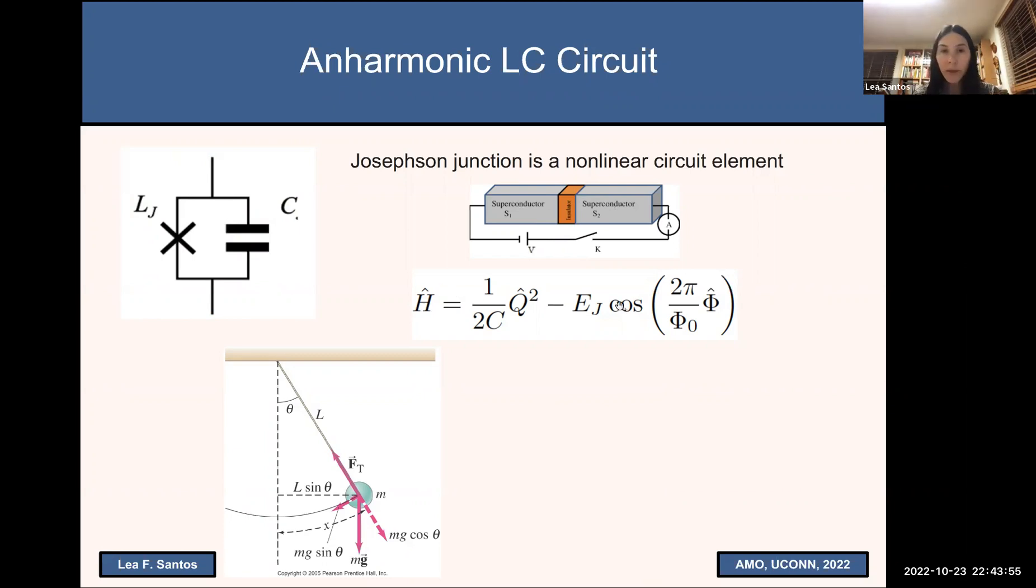Once we add the Josephson junction, we change the Hamiltonian. Instead of having the flux squared, now we have cosine of the flux. So this system is equivalent, not to a harmonic oscillator, but to a pendulum. Remember the pendulum. And so here we have the pendulum. We have the gravitational force. The component of this gravitational force which will allow this movement is this sine of theta. So that means that the potential is cosine of theta. Well, here that's what we have. Cosine of the flux.